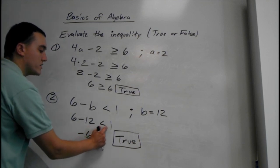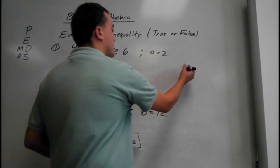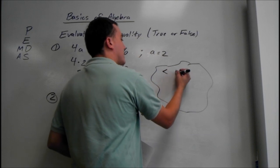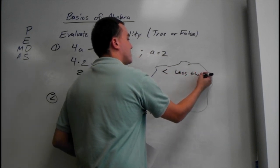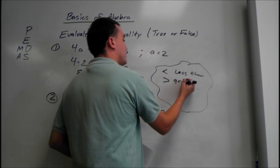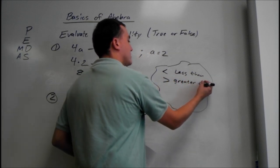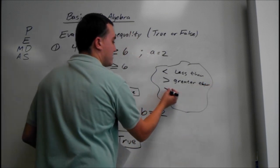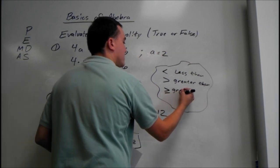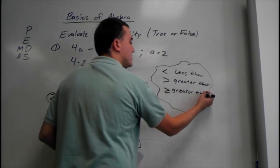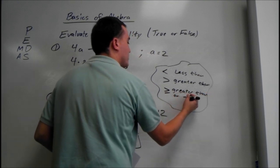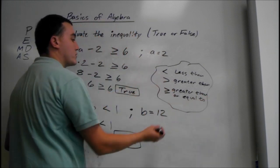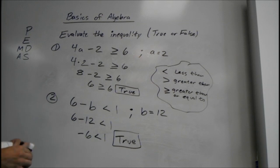Knowing how to read these symbols is really useful. If the symbol opens this way, that means less than. This way would be greater than. And if it's got the bar under it, that would be greater than or equal to. You can figure out less than or equal to — just the bar under the less than symbol. That's it for today.